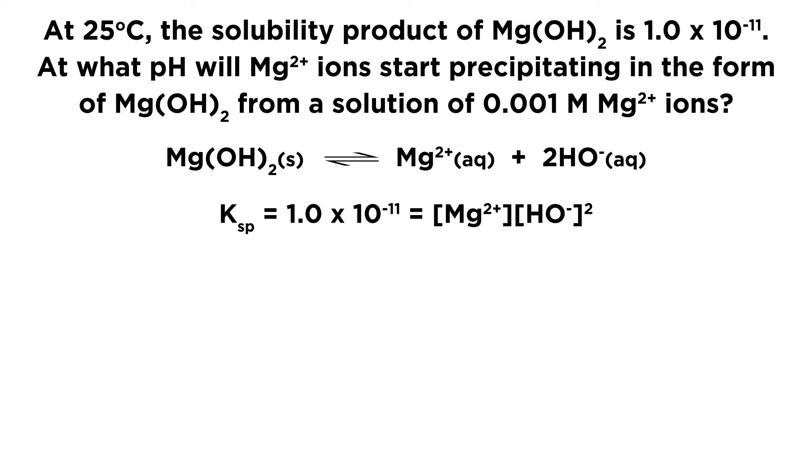Now we can also write the Ksp expression, because we know that the Ksp is equal to 1.0 times 10 to the negative 11, and we know that that is going to be equal to the magnesium ion concentration times the hydroxide ion concentration squared, because there is a coefficient of 2 in front of hydroxide in that equilibrium.